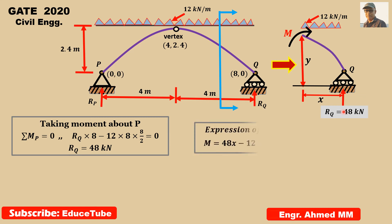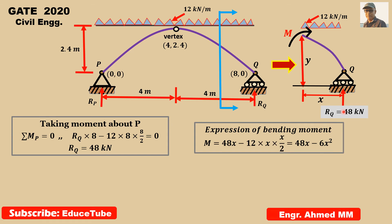Now we need to find the bending moment equation M in terms of x. Taking moment about the cut section: 48 multiplied by x (anti-clockwise, positive), then minus 12 multiplied by x, with the UDL concentrated at x/2 (clockwise, negative). So we get the equation: M = 48x − 6x².